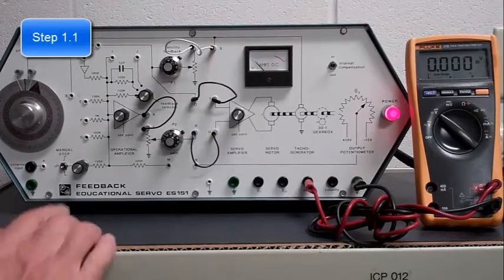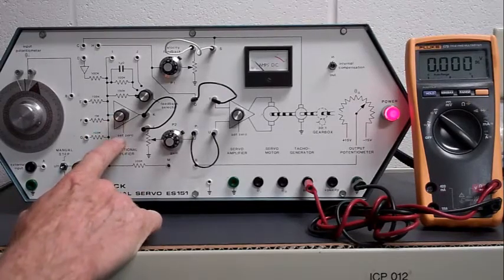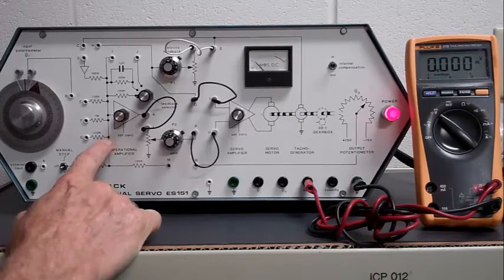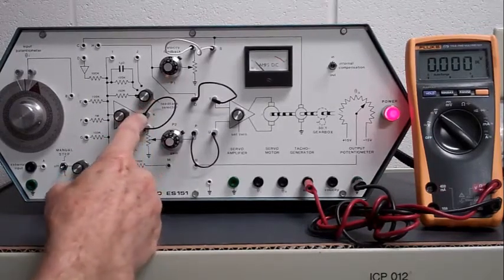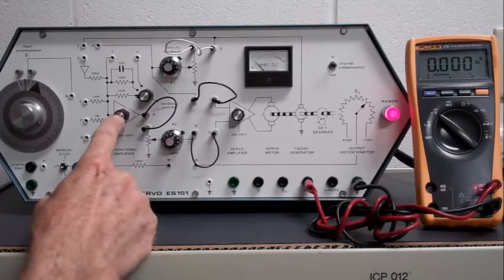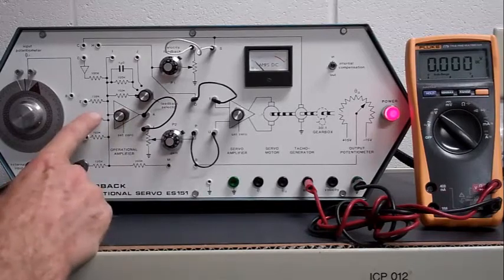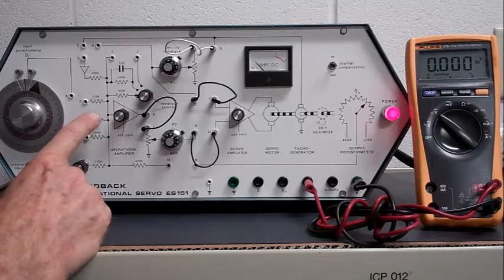Next, we zero the operational amplifier, that's this guy, with the zero set knob. The signal we're looking for is here. We want that to be zero by turning that knob, provided that there's no signal going into that op amp.